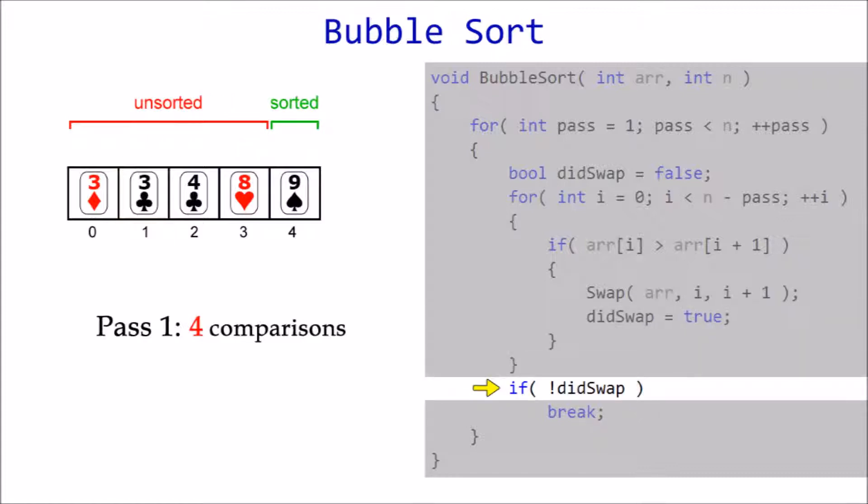Now for an early exit condition. If no swaps take place during a given pass, we can safely assume that the list is already sorted. With that said, did we swap any elements during this pass? Yes, nine was swapped three times in order for it to bubble up to the end. So we need to continue the algorithm.